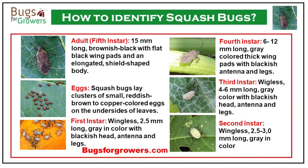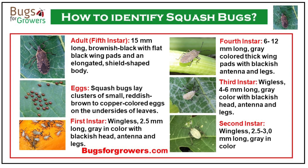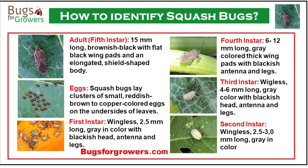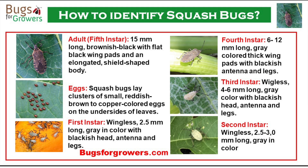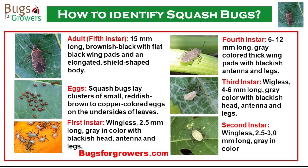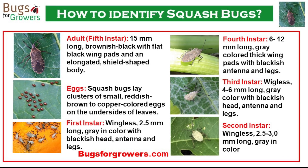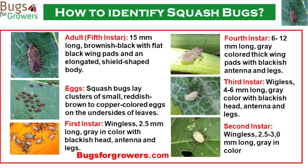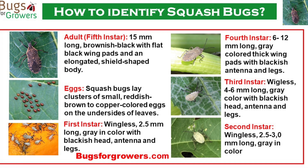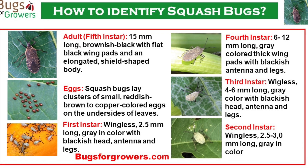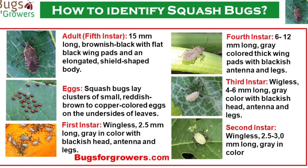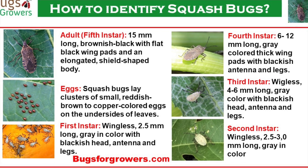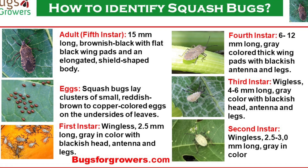Nymphs typically develop through five stages. Adults are flat, shield-shaped and usually brownish to black or grey in colour, measuring about 16 mm in length. Eggs are oval shaped and laid in clusters, starting as orange to yellow but turning reddish brown to copper in colour just before hatching. Nymphs are wingless and grey with black heads and tiny legs.